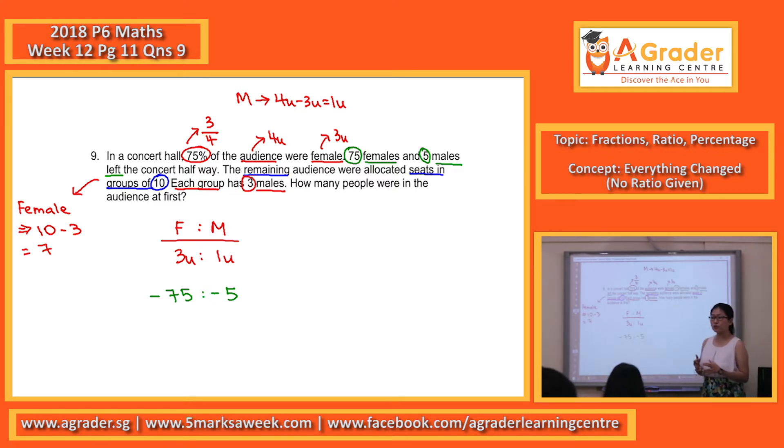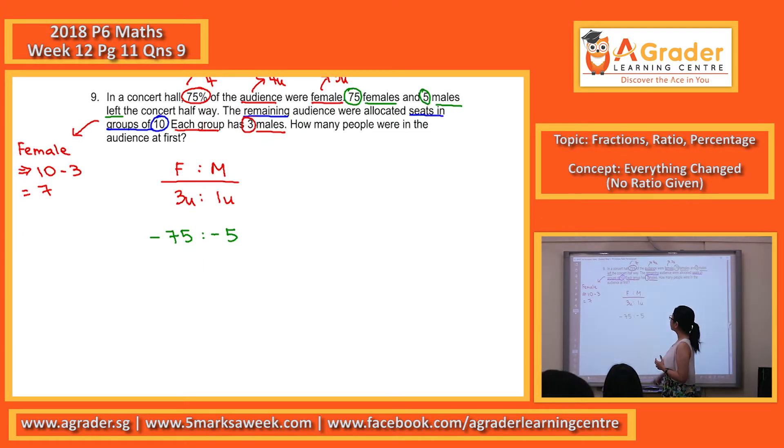So you know that for every one group, 7 females, 3 males. And it will always occur in this. So in other words, they're actually giving you the ratio. Just that they do not give it to you so straightforward. But you need to understand that you can get ratio from here. So the female to male, 7 to 3.